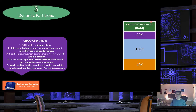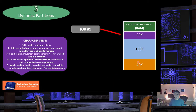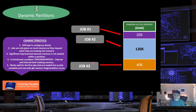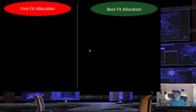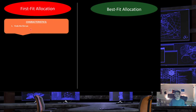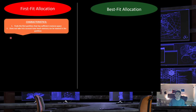With dynamic partitions, we have three partitions in RAM: 20K, 130K, and 40K. Job one takes the 20K partition, job two takes 130K, and job three takes 40K. Memory allocations can be completed in two different ways: first fit allocation or best fit allocation. For first fit allocation, it finds the first partition with sufficient memory space and does not consider how much memory may be wasted. It just finds the first partition large enough to complete the job.